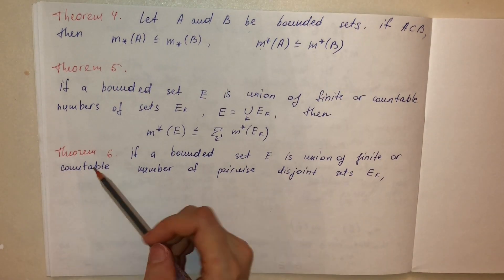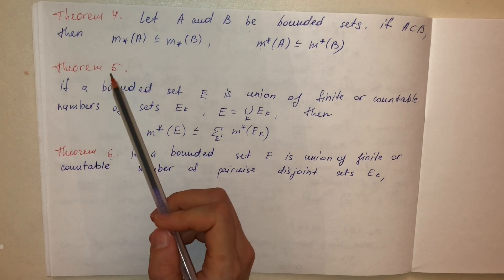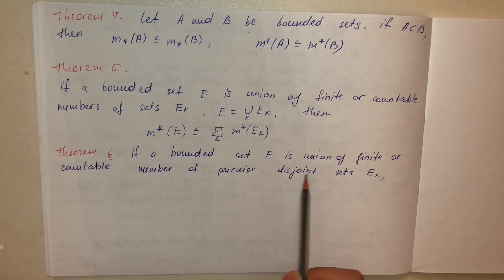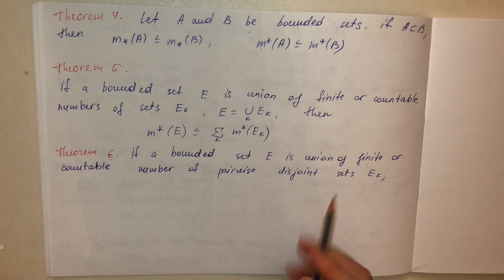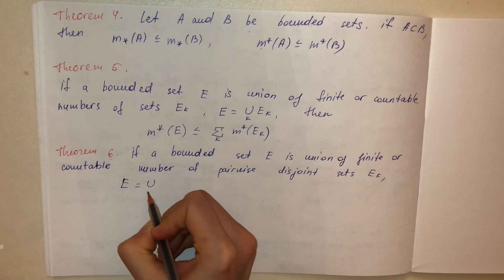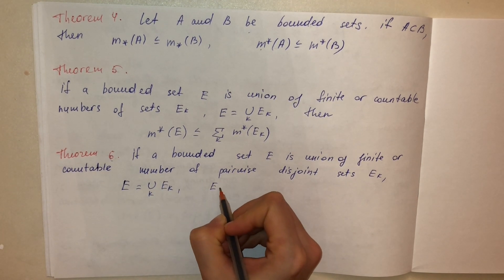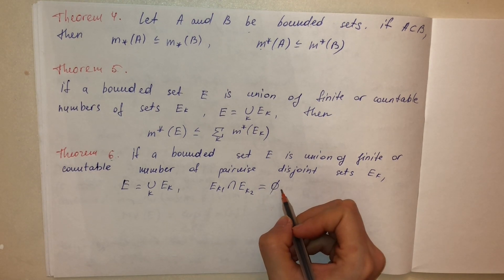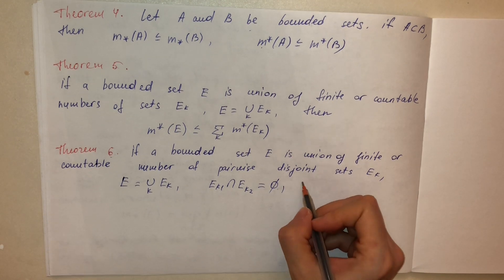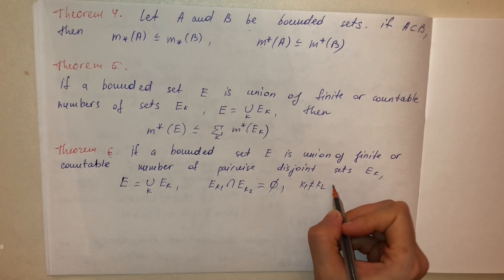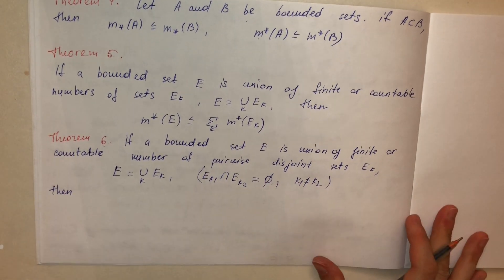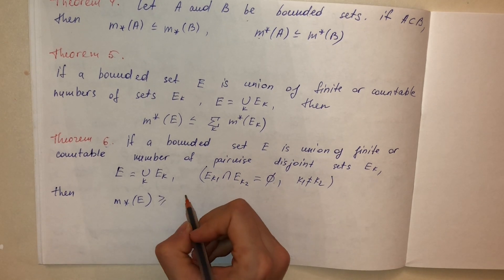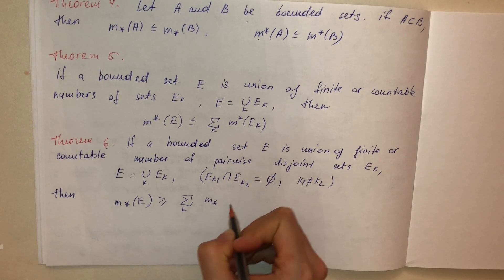Theorem 6: With respect to Theorem 5, if a bounded set E is the union of a finite or countable number of pairwise disjoint sets — meaning E equals the union of E_k where E_k are disjoint, i.e., their intersections are empty sets with no common elements — then the inner measure of E is always greater than or equal to the sum of the inner measures of E_k.